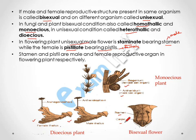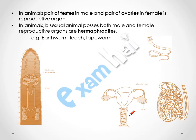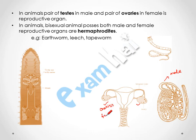In animals, a pair of testes is present in the male and a pair of ovaries is present in the female. Hermaphrodites are animals that are bisexual, having both male and female reproductive organs in the same organism — examples include earthworm, leech, and tapeworm.